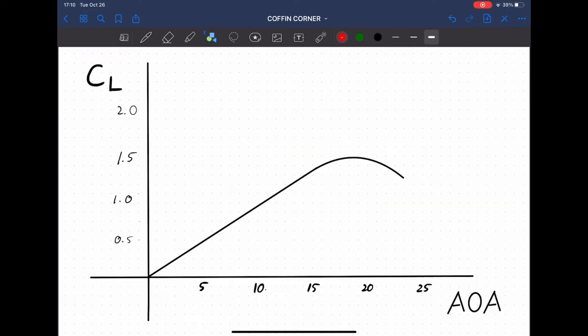I'm going to do a very quick crash course on stalls. X-axis is angle of attack. Y-axis is coefficient of lift. Pull back on the stick, CL goes up.